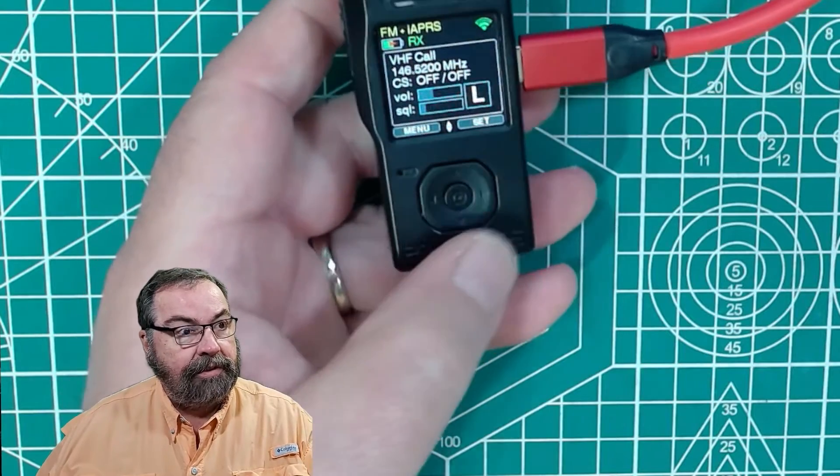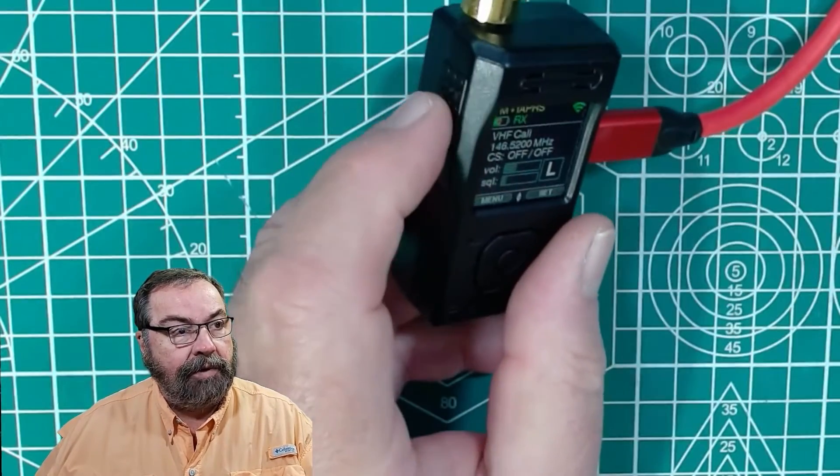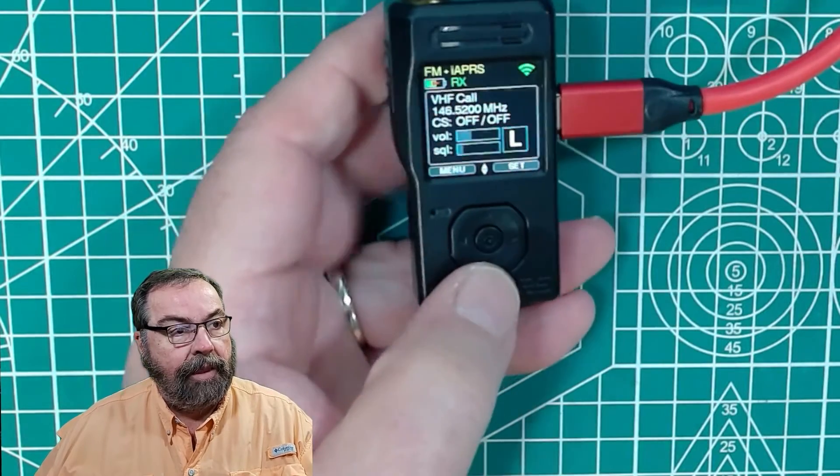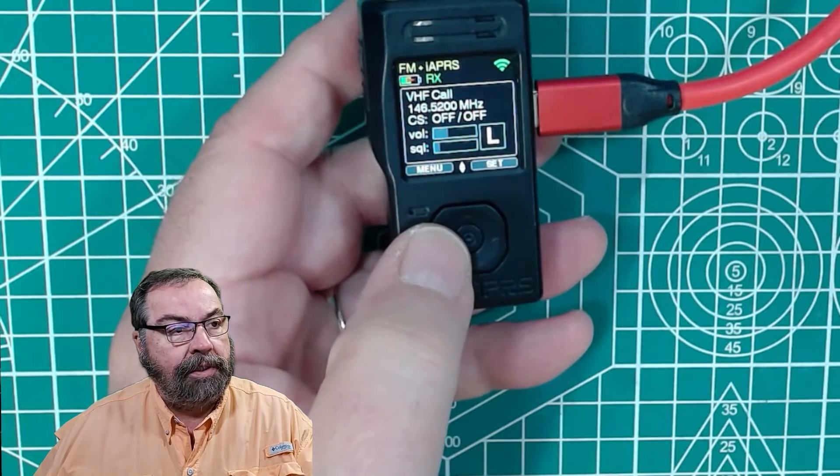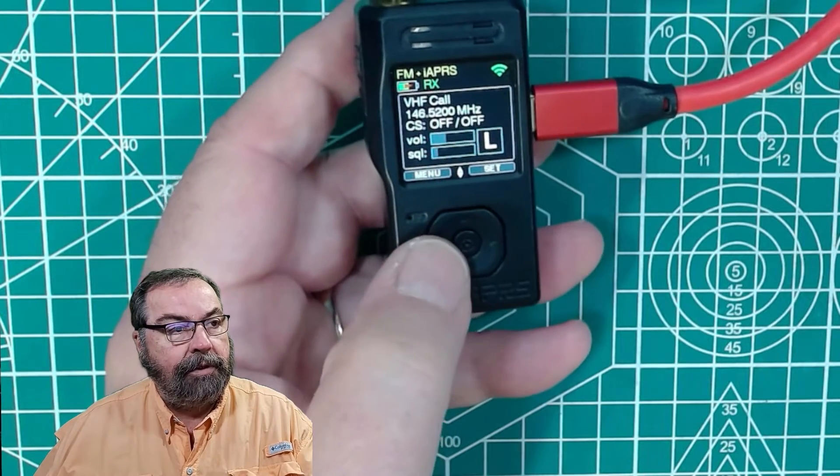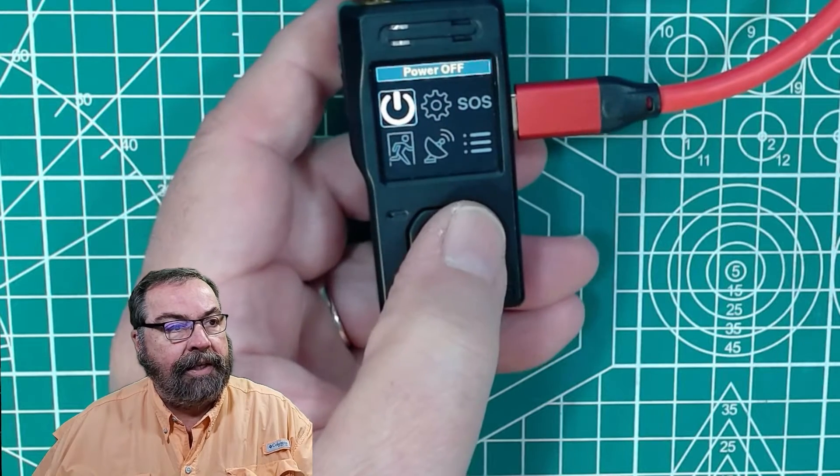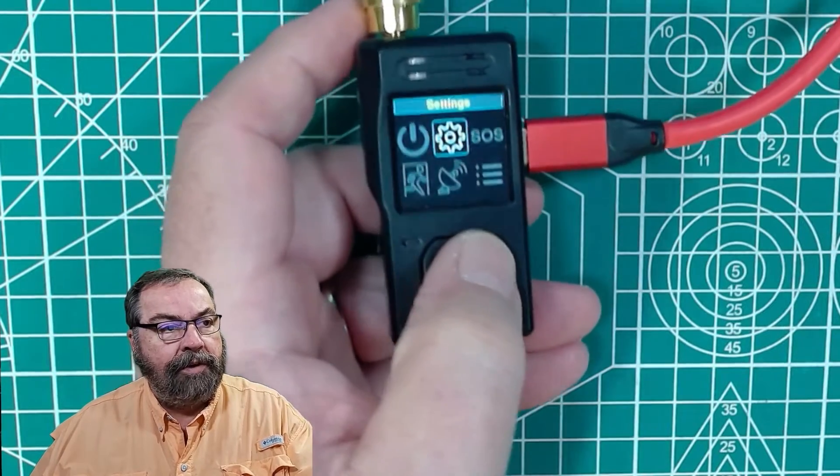So when we go into the settings, everything you can do with this device, this is the on button right here. You press and hold that. That's also your transmit button. But everything else you control through this thumb wheel joystick looking dingus in the middle here. So the menu is a right click, and that gives us our basic menu options. We can set our mode and various other settings.